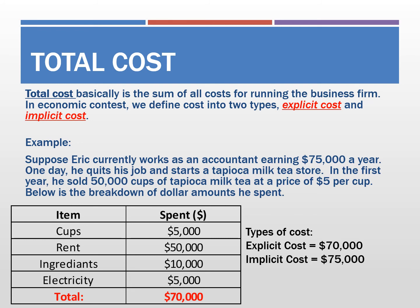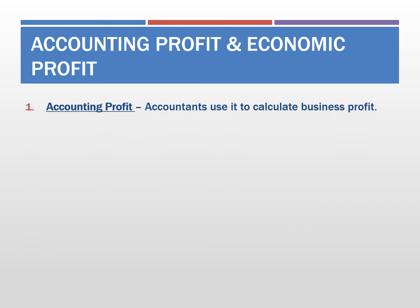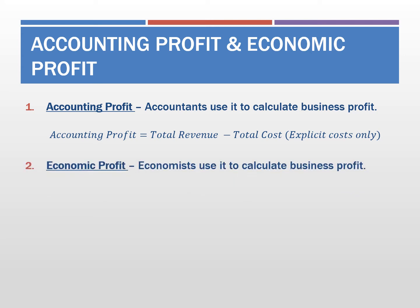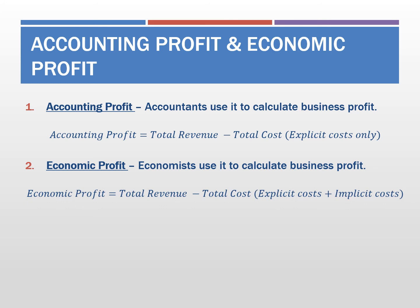Without including implicit cost, we cannot compare whether Eric is doing better than before. The accounting profit is calculated as total revenue minus explicit cost only. The economic profit is calculated using total revenue minus total cost, where total cost includes both explicit cost and implicit cost — both the cost of production and the opportunity cost of running the business.